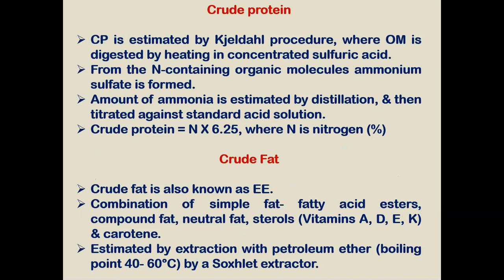Crude protein is estimated by the general Kjeldahl procedure. The organic matter is digested by heating in H₂SO₄; from nitrogen-containing organic molecules, ammonium sulfate is formed. The amount of ammonia is then estimated by the distillation process. Three processes are involved in the estimation of total nitrogen: digestion, distillation, and titration.